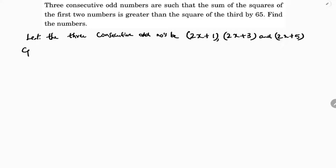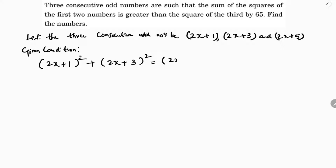According to the given condition, the sum of the squares of the first two numbers — (2x+1)² + (2x+3)² — equals the square of the third number (2x+5)² plus 65. If you simplify this, you will get the numbers.